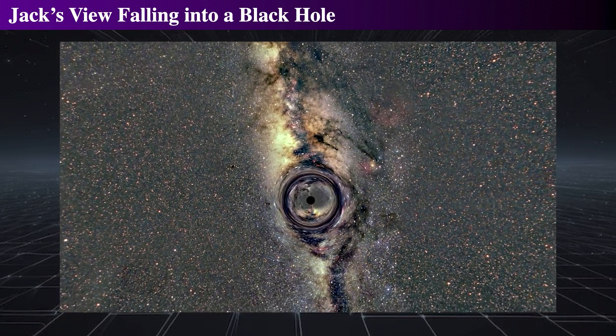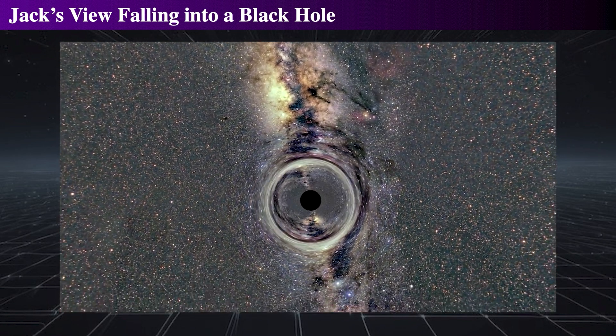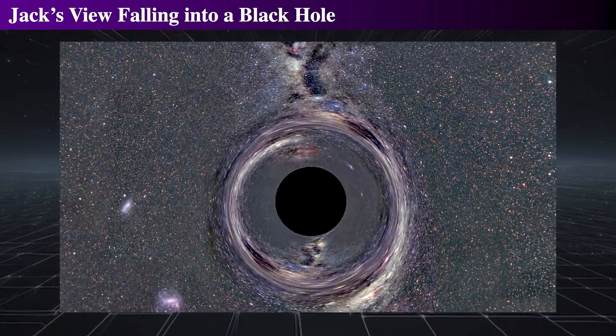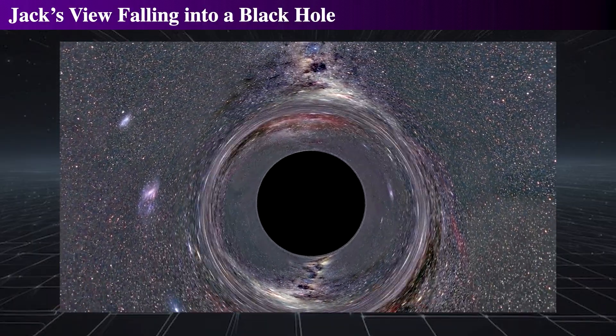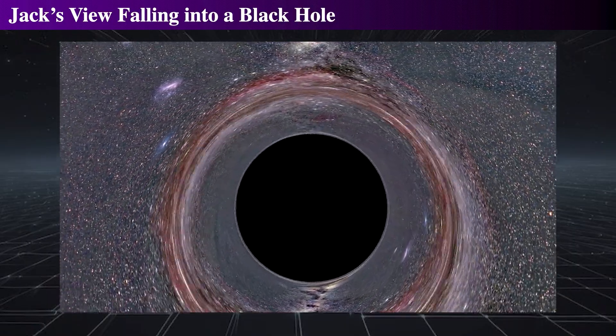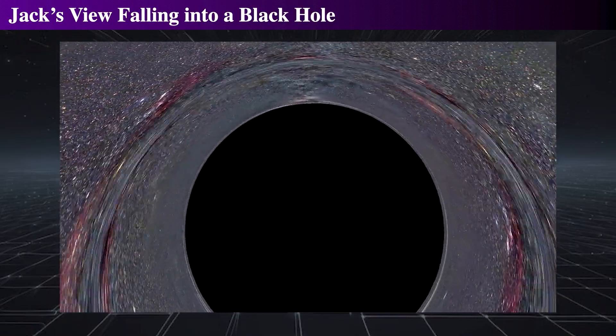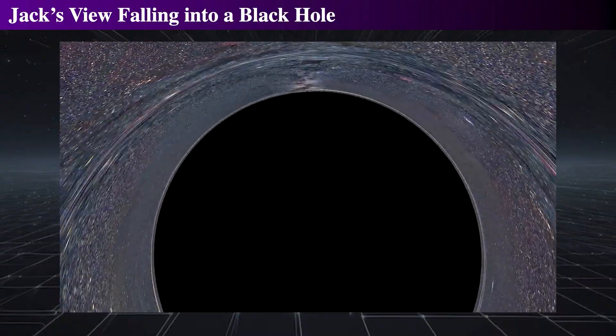Basically, Jack never gets to see the singularity, because all the light is headed towards the singularity, and none is headed away from it. At the center of the black hole is the singularity, which is a place of infinite curvature, where space and time as you know them come to an end.